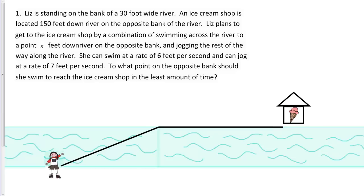Let's work through the following optimization problem together. Liz is standing on the bank of a 30-foot wide river. An ice cream shop is located 150 feet downriver on the opposite bank. Liz plans to get to the ice cream shop by swimming across the river to a point X feet downriver on the opposite bank and jogging the rest of the way. She can swim at 6 feet per second and jog at 7 feet per second. To what point should she swim to reach the shop in the least amount of time? This is actually a really famous type of optimization problem — a standard problem you always see in the optimization section of a calculus book.